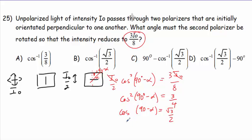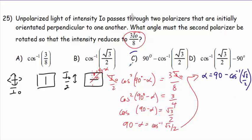Take inverse cosine of both sides. 90 minus alpha equals cos to the minus 1, square root 3 over 2. So alpha here is going to come out to be 90 degrees minus cos to the minus 1 of square root of 3 over 2, which is answer C.